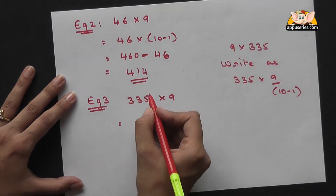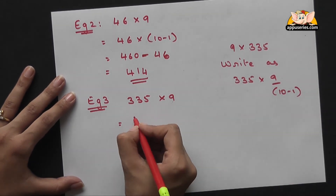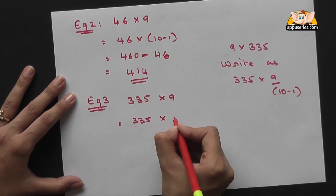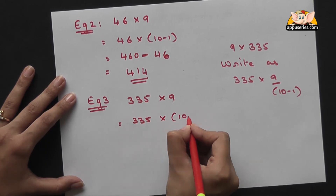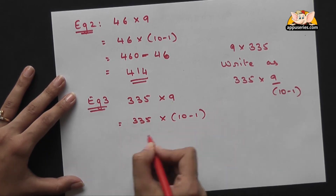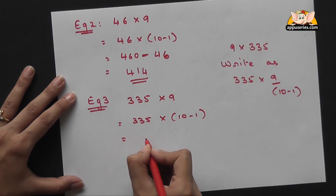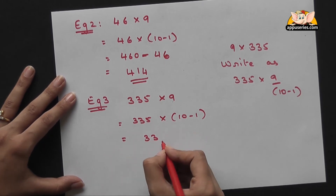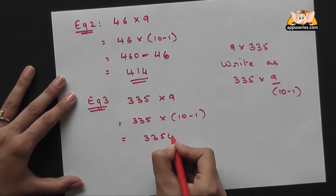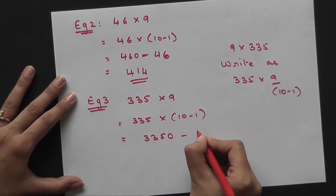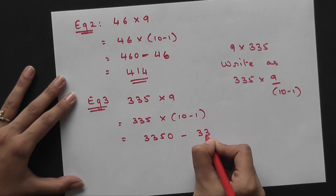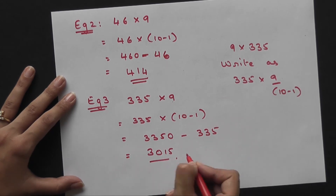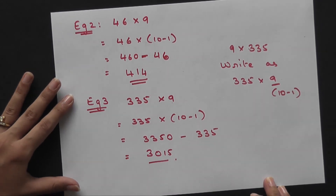So we'll do the same here. Three thirty-five into ten minus one gives you three thousand three hundred fifty minus three hundred thirty-five, which is three thousand and fifteen.